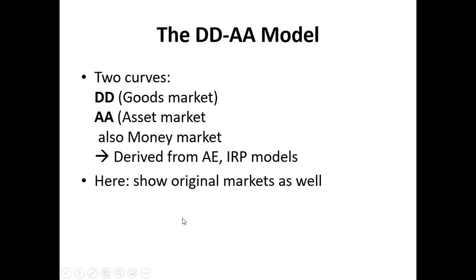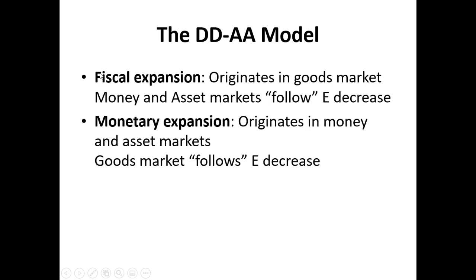We can see what's really going on in the markets as we shift the curves. I'm going to do two things. First, the fiscal expansion, which originates in the goods market because government expenditure increases — that will shift the DD curve and we'll get our final answer. We can also see what follows as we shift along the AA curve as the money and asset markets follow. We've got a leader and a follower. Monetary expansion originates in the money and asset markets, causing currency depreciation, which affects the goods market through exports and imports. You can then move along the DD curve after you shift the AA curve.